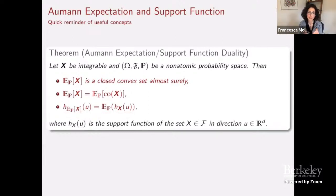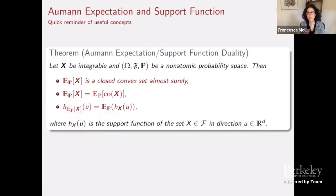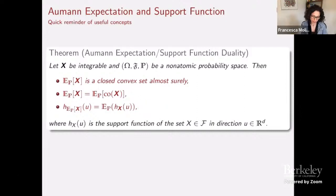The result that is going to be useful for our identification analysis is the following: if you have an integrable random closed set X defined on a non-atomic probability space, then the Aumann expectation is a closed convex set. The Aumann expectation of the set equals the Aumann expectation of its convex hull. Most importantly, the support function of the Aumann expectation in direction u equals the standard expected value of the support function of the set X. This ability to pass the Aumann expectation through to the support function is what gives us all the computational tractability.